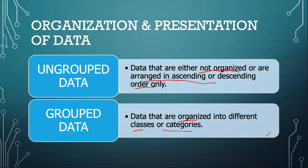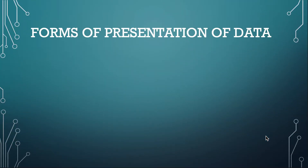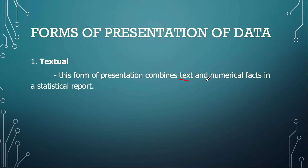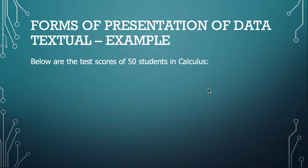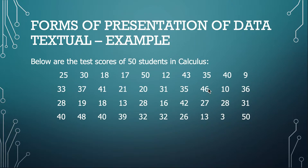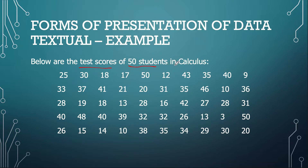We're going to get into them one by one. First, let's talk about the forms of presenting data. The first form is via textual presentation. This form combines text and numerical facts in a statistical report. The examples here are more on numerical facts, but it can also be in the form of text. Say we have test scores of students taking a calculus class — these are the scores of those 50 students. This is a textual way of writing it, as these are numerical facts: test scores of 50 students in calculus.